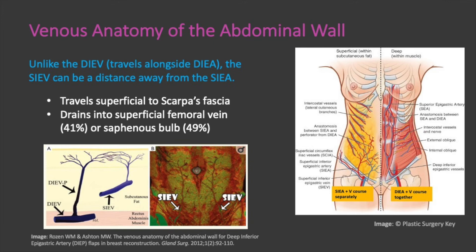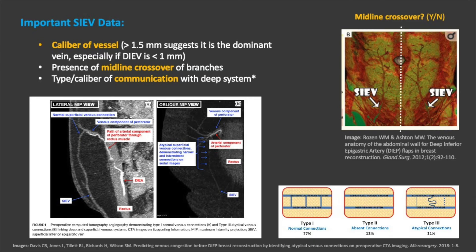Unlike the deep inferior epigastric vein, which travels alongside the DIEA, the superficial inferior epigastric vein can be a short distance away from the SIEA. This vein travels superficial to Scarpa's fascia and drains into the superficial femoral vein or the saphenous bulb. The caliber of venous perforators, the degree of midline crossover, and the caliber of the communicating vein between the perforating vein and the SIEV are important predictors of venous compromise. It can be helpful to identify the presence and caliber of this communication on CTA, as this information can aid in perforator selection.